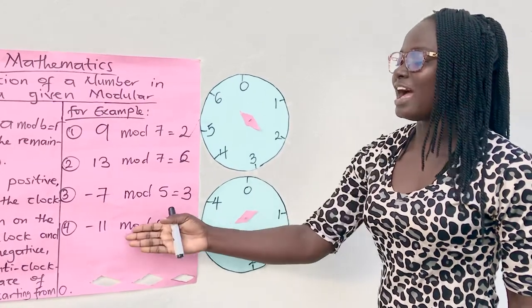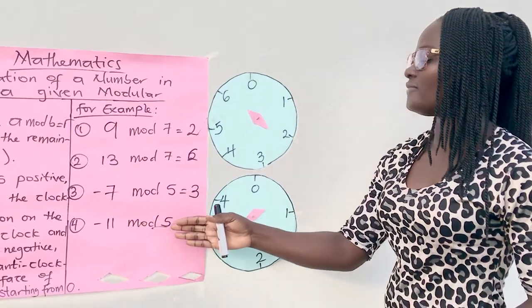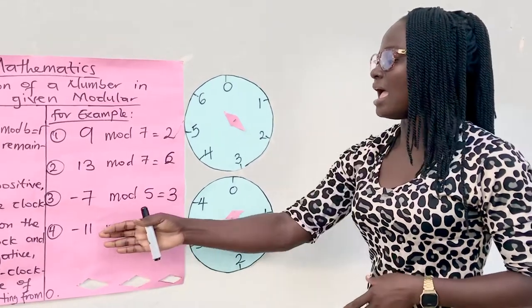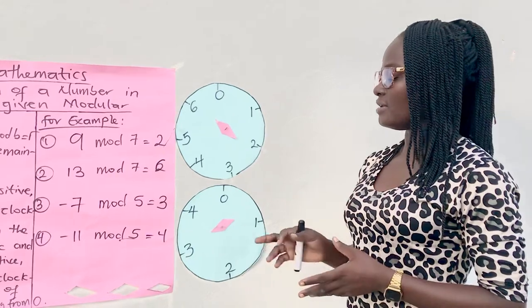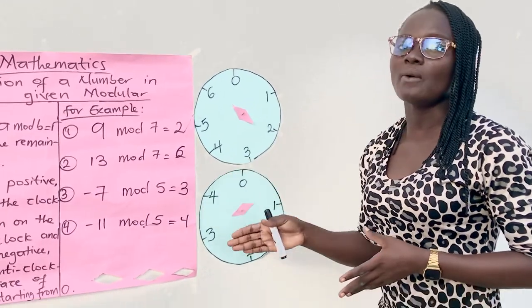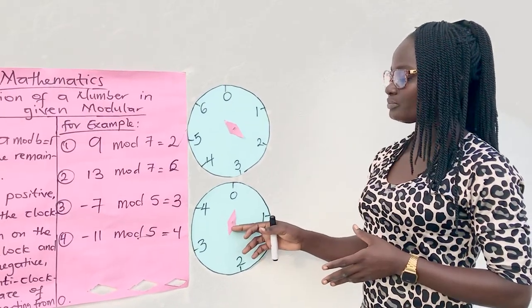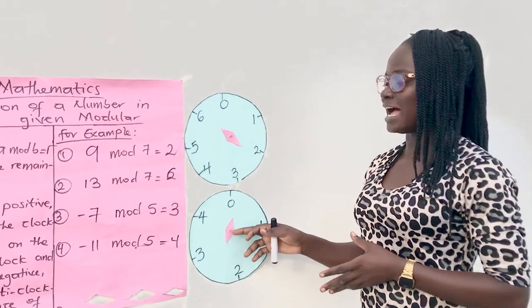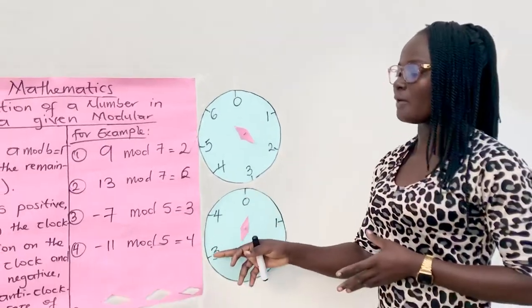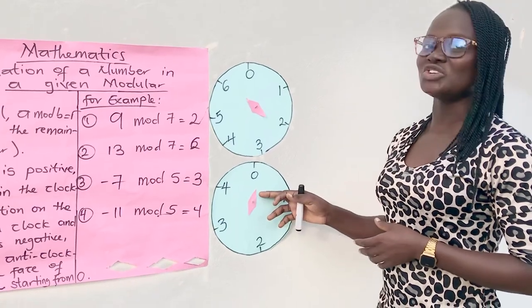The last example we have here is negative 11 mod five. Our A is negative. Therefore, we are going to move in the anticlockwise direction starting from zero. So we start from zero and move in the anticlockwise direction eleven times. Let's go through together.